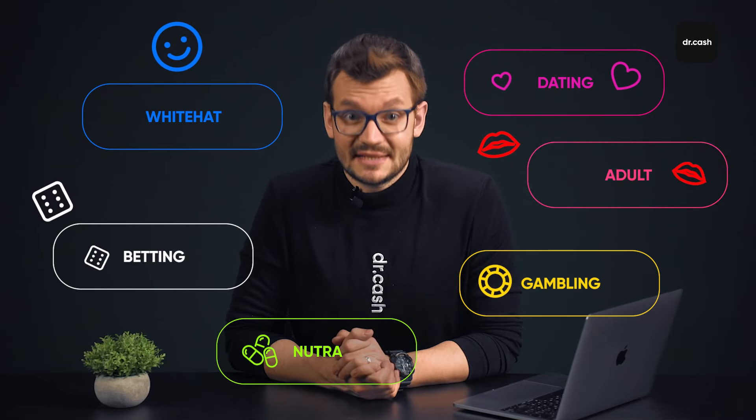As for verticals, you can see the list of popular ones — it's headed by white hat offers, and there is also nutra and adult. When working with white offers, everything is more or less clear, but when working with gray ones you will have to work harder.